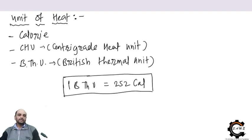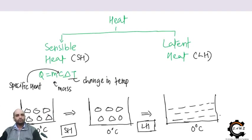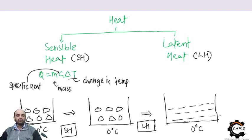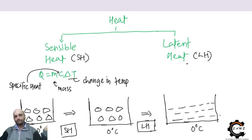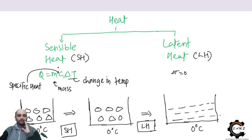There are two types of heat: sensible heat and latent heat. Sensible heat is heat we can sense — it involves a rising or falling temperature. If there is a temperature change (ΔT ≠ 0), that heat is sensible heat. Latent heat involves a phase change — from solid to liquid or liquid to gas — but with no temperature change (ΔT = 0).